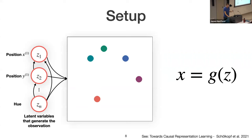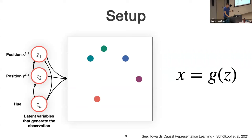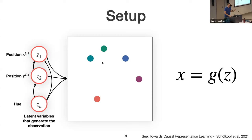To make this concrete, here's a simple toy problem where I know the generator function g — it's just the Pygame game engine. I plug in positions for each of these balls and maybe a hue, so I know the latent state exactly. We get images like this, and the question is: can I recover the roughly 15 numbers it took to render this image?